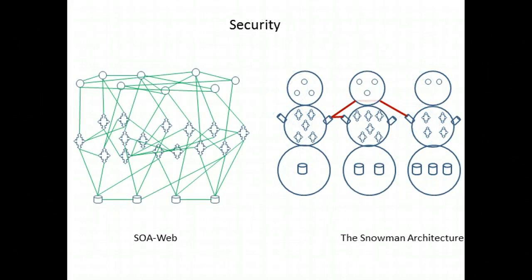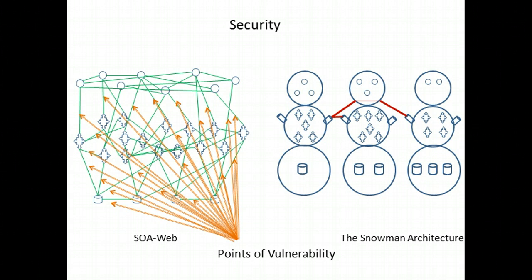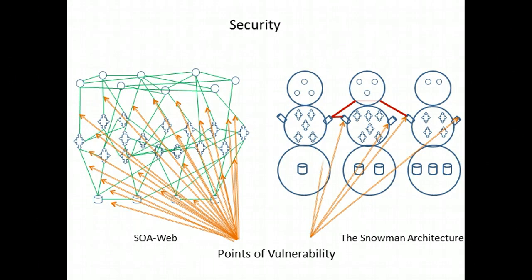The last attribute is security — how easy it is to protect the system from unauthorized usage or manipulation, especially at the data level. In the SOA web architecture, configuring the database so that technical services can access the data they need is very difficult, and virtually every message becomes a point of vulnerability. The snowman architecture has a much easier database configuration model: simply configure the data level to give access to any processes living in the torso, deny all access to anybody else, protect the incoming portals, and you have a highly secure architecture with the least possible number of vulnerabilities.